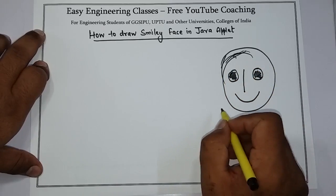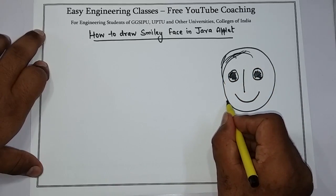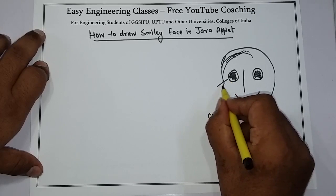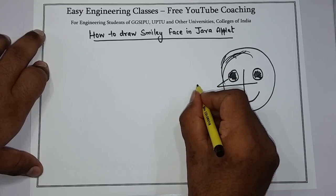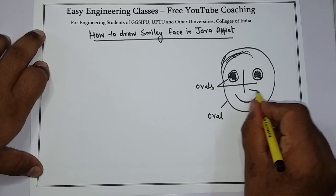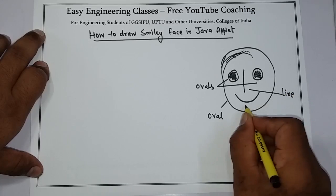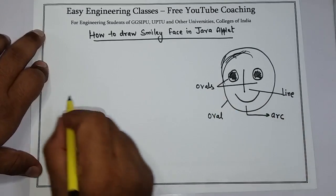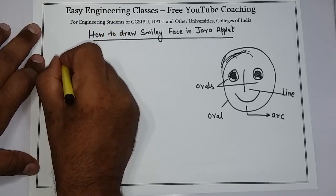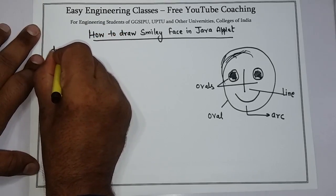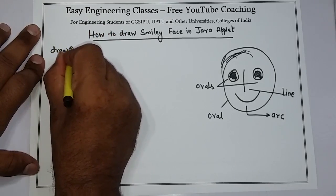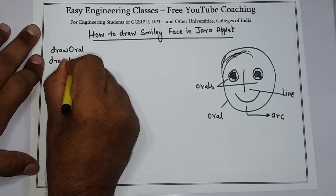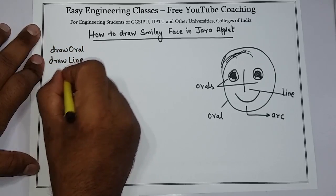Now we need to know what I want to draw. I want to draw a smiley face - two small ovals for the eyes, one line for the nose, and one arc for the smile. So you have to use the drawOval method, drawLine method, and drawArc method.